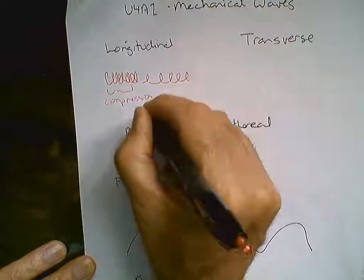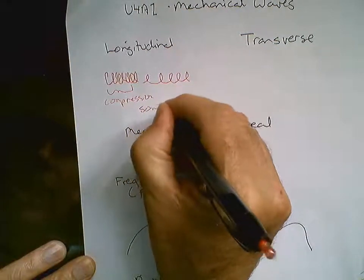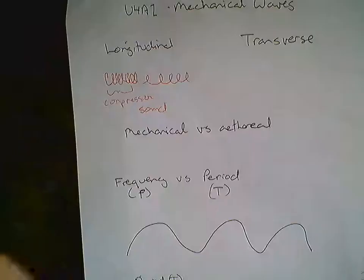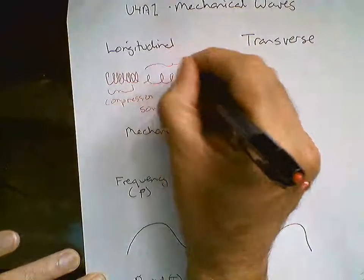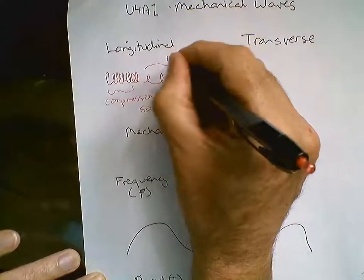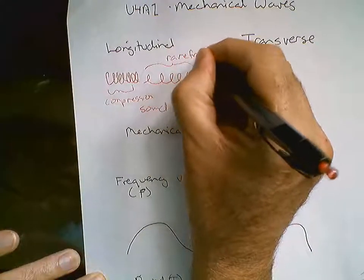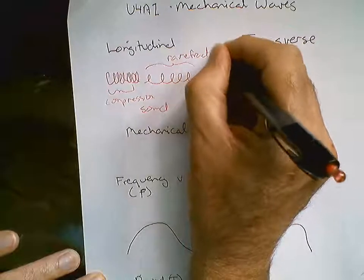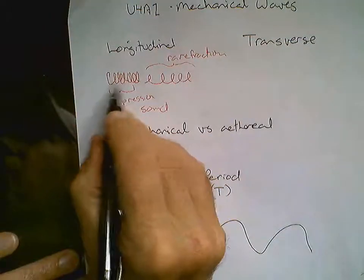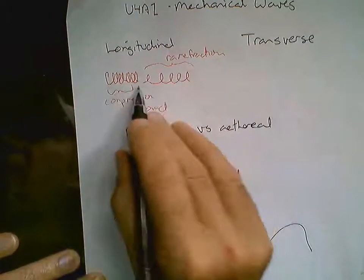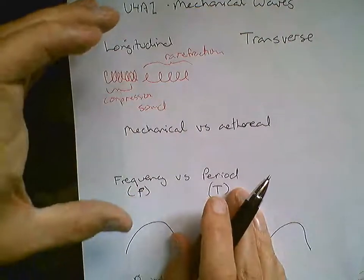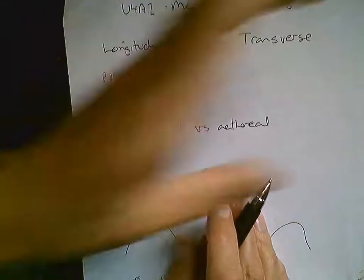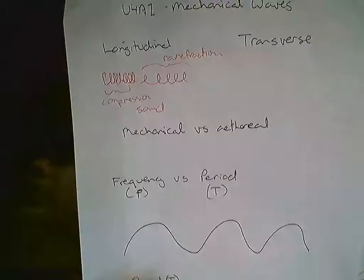These are like sound waves. This is your area of rarefaction — this is where the waves are condensed and then spread out. So once again, we took a slinky, held it in our hand and pushed it. This is a longitudinal wave.